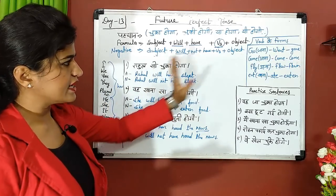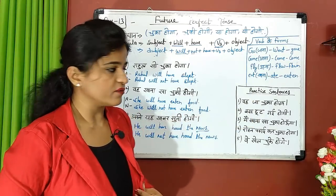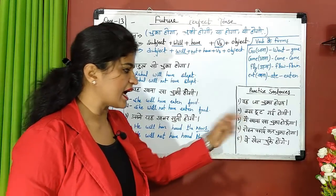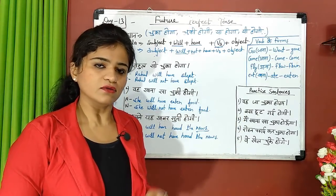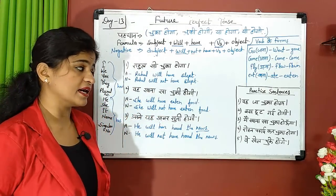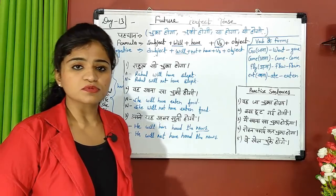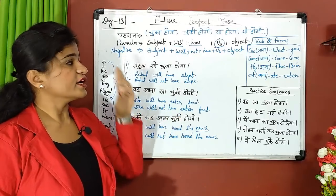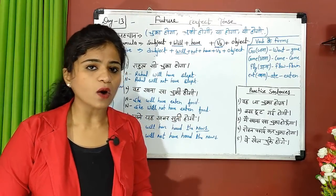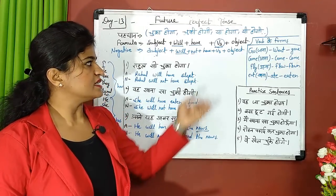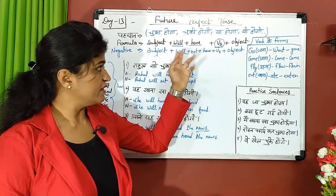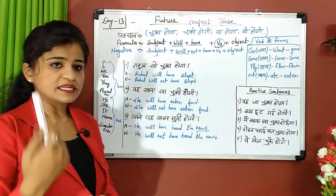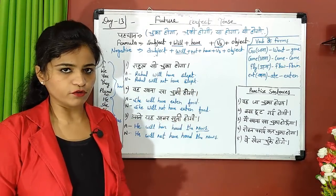These sentences use the same formula. Now apply it — try to translate both affirmative and negative sentences yourself. Do your best and cross-check. You have learned the last two tenses and practiced using the verb third form.